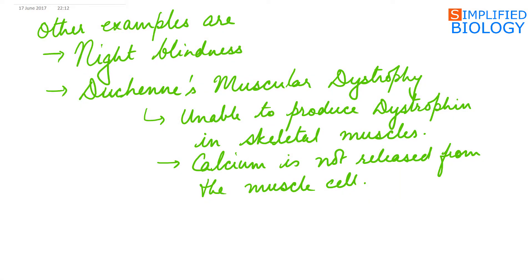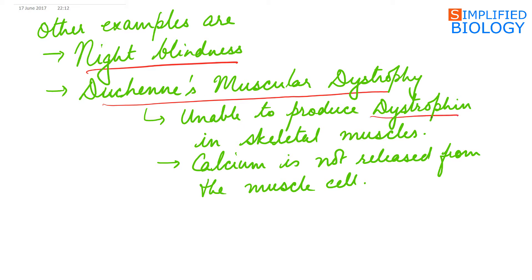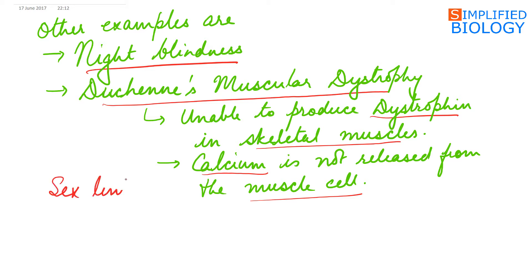Other examples of sex-linked inheritance are night blindness and Duchenne's muscular dystrophy. Persons with Duchenne's muscular dystrophy are unable to produce dystrophin in skeletal muscles, due to which calcium is not released in the muscle cells. These also occur due to a sex-linked recessive gene.